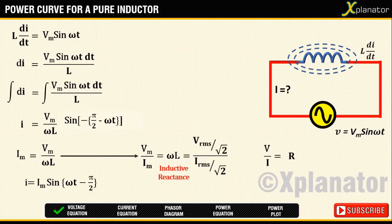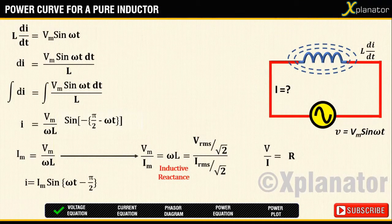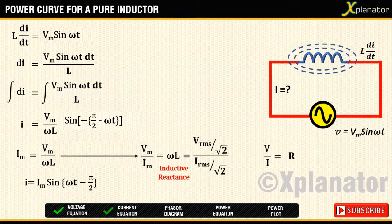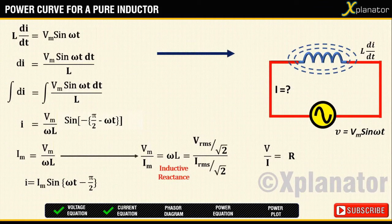Now that we have the equations for voltage and current, we can proceed to drawing the phasor diagram. For phasor diagram, we need to consider a reference line. Let that line be of voltage.